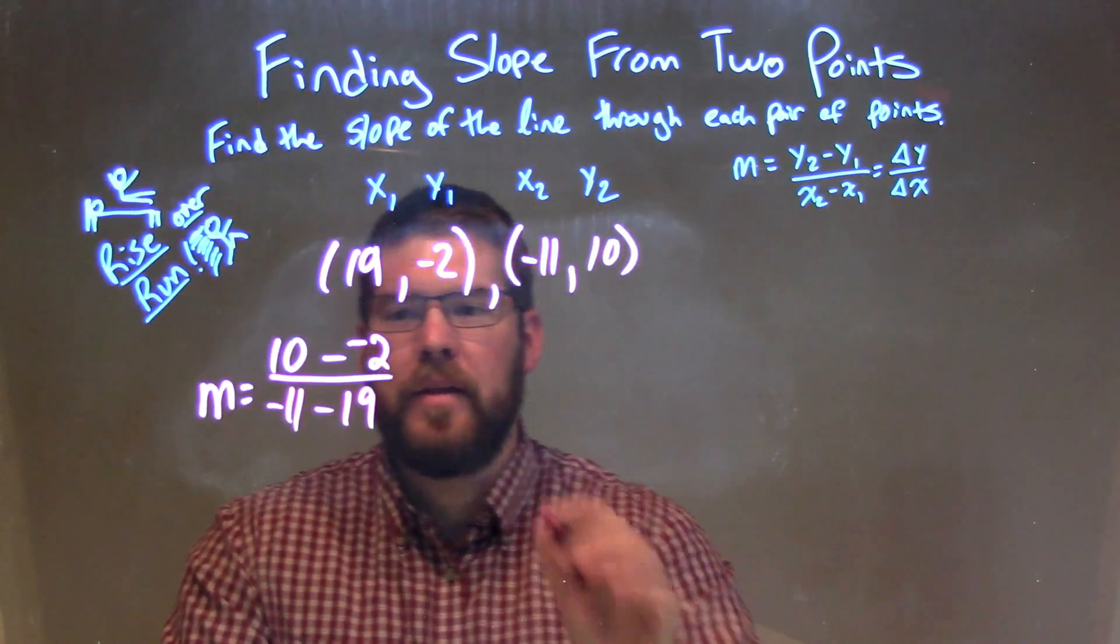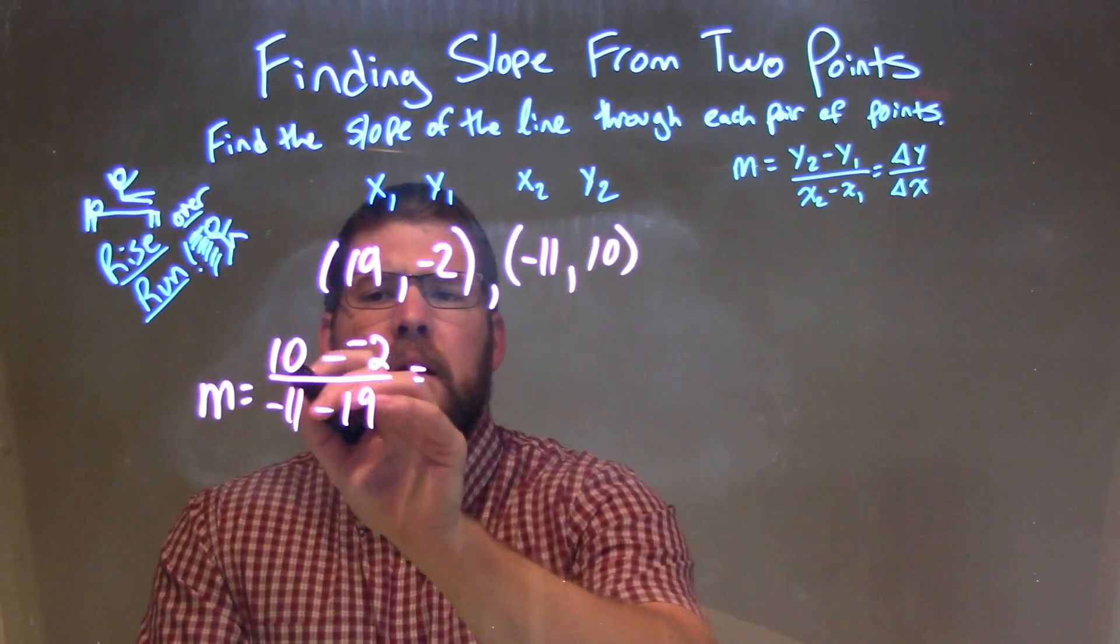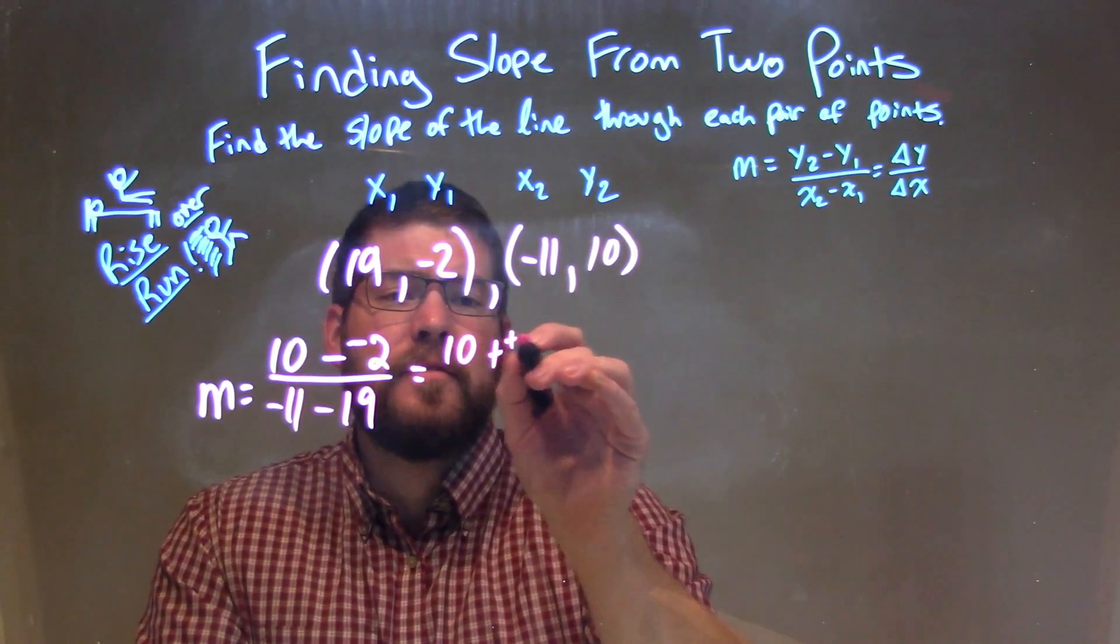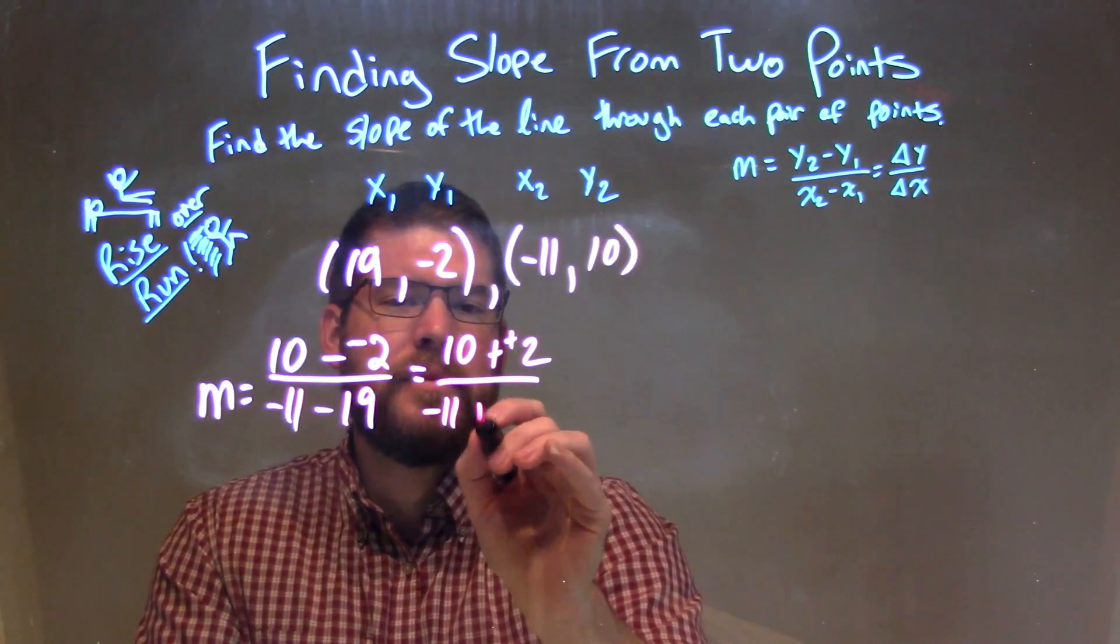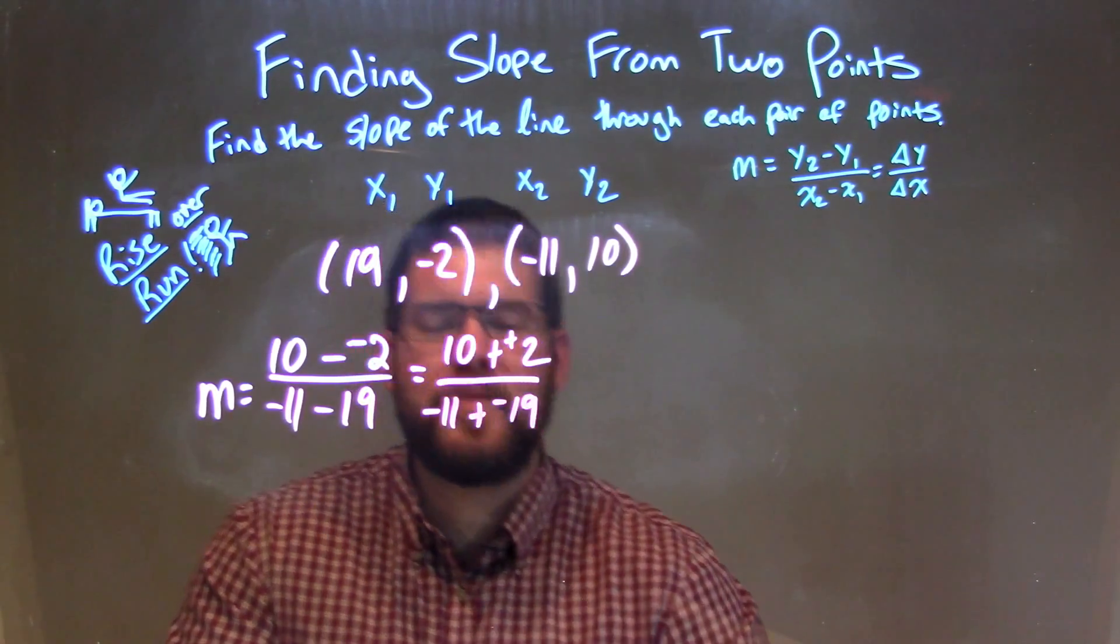So now let's go simplify that. 10 minus a negative 2, we can see is 10 plus a positive 2, and negative 11 minus 19 is plus a negative 19. Sometimes that's easier to see.